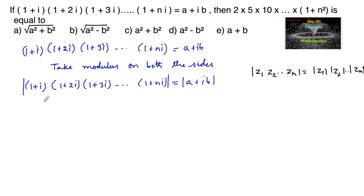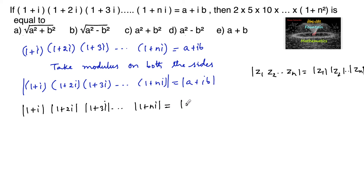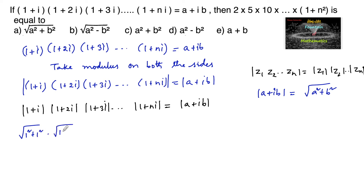So we can apply the mod for each and every complex number inside: mod(1+i) into mod(1+2i) into mod(1+3i) and so on mod(1+ni), which is equal to mod(a+ib). And also we know that mod(a+ib) is equal to root over (a²+b²). So mod(1+i) into root over (1²+2²) into root over (1²+3²) and so on root over (1²+n²), which is equal to root over (a²+b²).